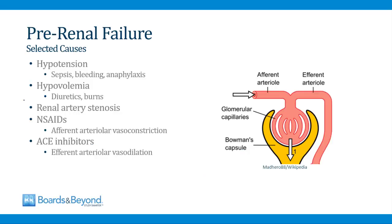There are lots of causes of pre-renal failure. A patient who is hypotensive for any reason will underperfuse the kidneys — this could be from sepsis, bleeding, or anaphylaxis. If the hypotension is severe, it can lead to intrinsic kidney damage; if mild, it will just lead to underperfusion and pre-renal failure. Hypovolemia can also cause pre-renal failure. If patients are volume depleted from diuretics or fluid loss due to burns, those patients will underperfuse the kidneys. A stenosis in the renal artery can also cause pre-renal failure.